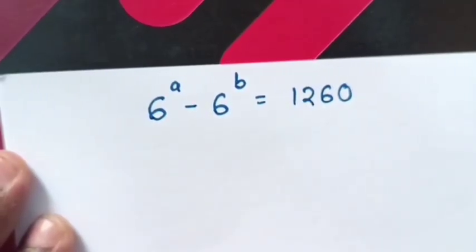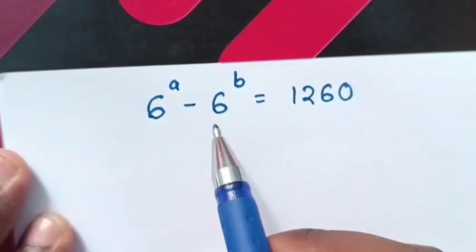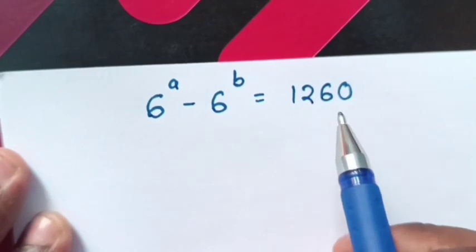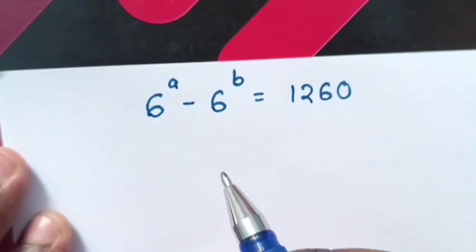Hello, how to solve 6 power a minus 6 power b is equal to 1260? Find the value of a and b.